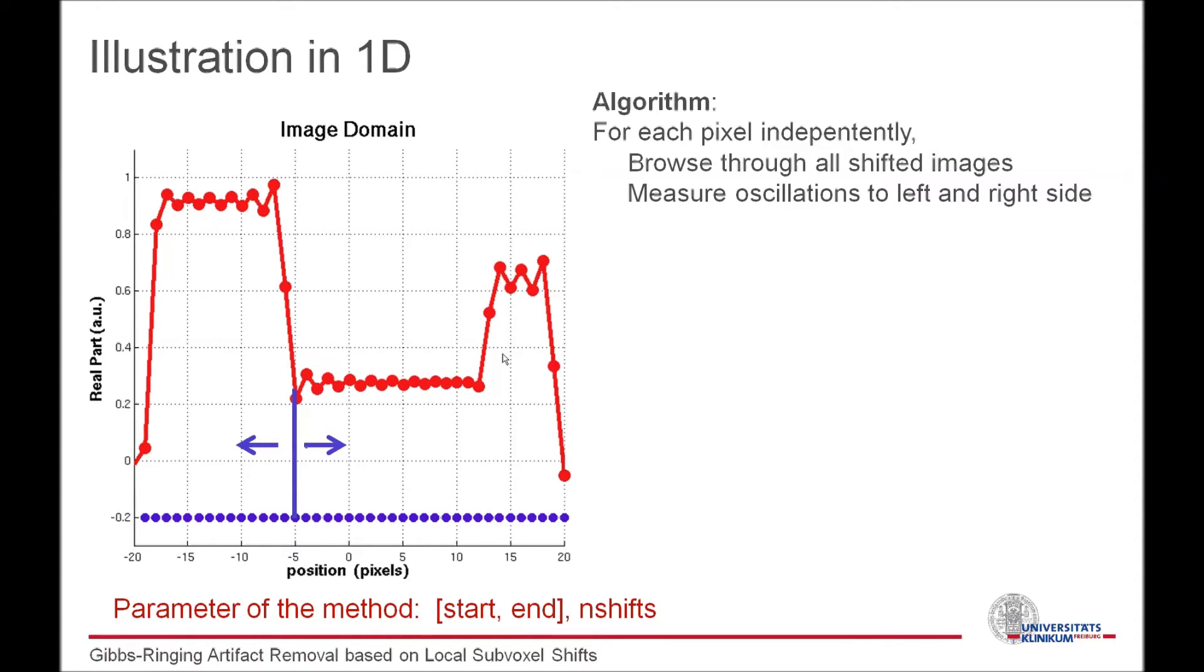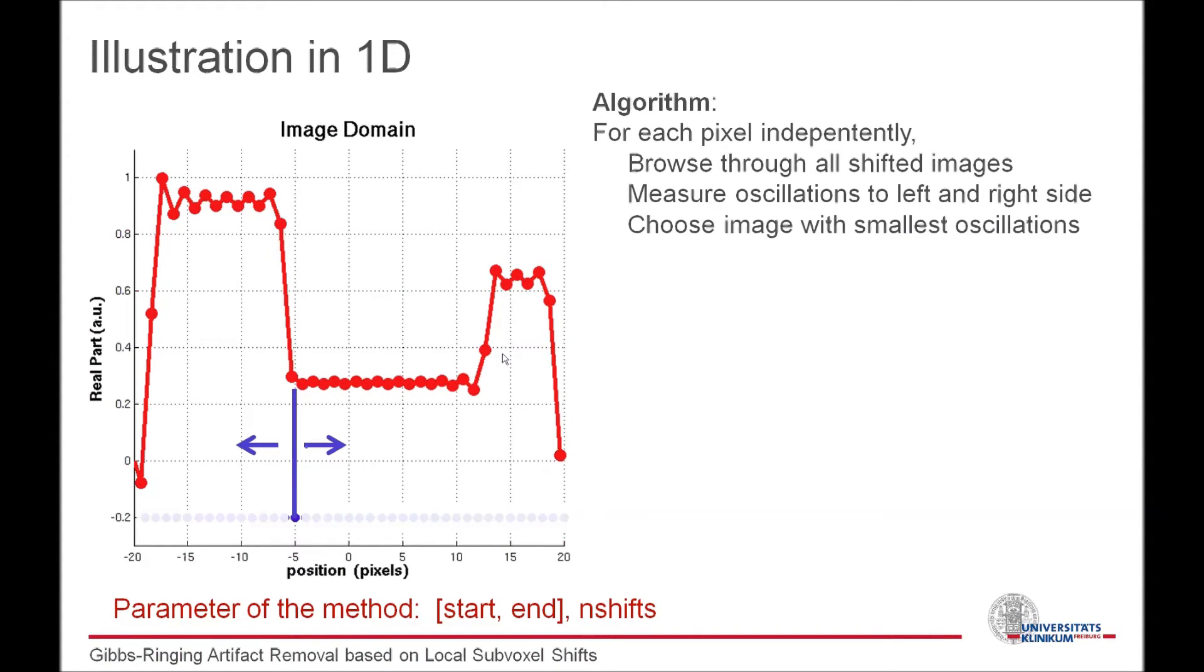Second, we calculate the oscillations in a given range only, defined by a start and end point, such that the edges close to each other do not interfere so much. With the starting point set to zero, we might or might not exclude the center point itself from the summation. This gives the method three parameters: the neighborhood range and the number of shifts. We saw that the value of 30 should be sufficient for the number of shifts. Finally, we select the image with the least oscillations.